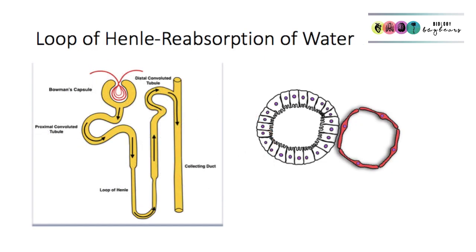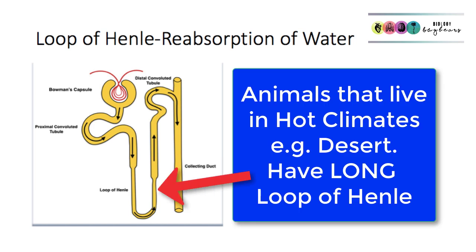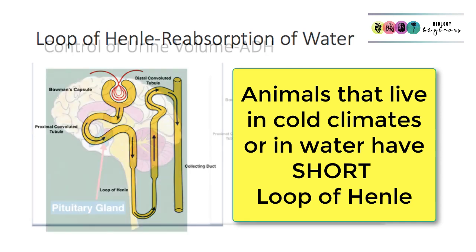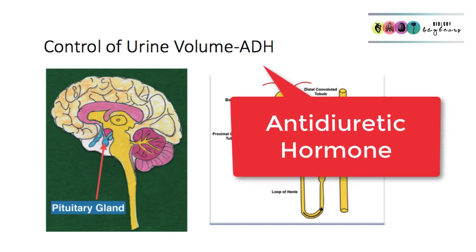That covers most of the key adaptations needed for your exam. Looking at the loop of Henle — it is very important in the reabsorption and conservation of water. Animals that live in very hot climates, for example in a desert, would have a very long loop of Henle. In comparison, animals that live in cold climates, particularly in water, would have short loops of Henle because they wouldn't have to conserve water. Another important part of this chapter is the control of urine volume and particularly the role of antidiuretic hormone, ADH.